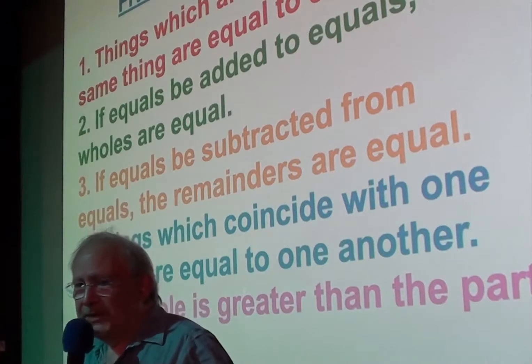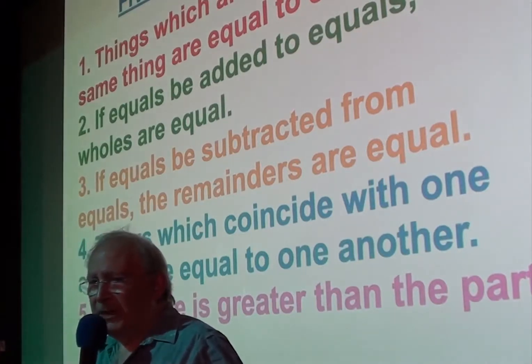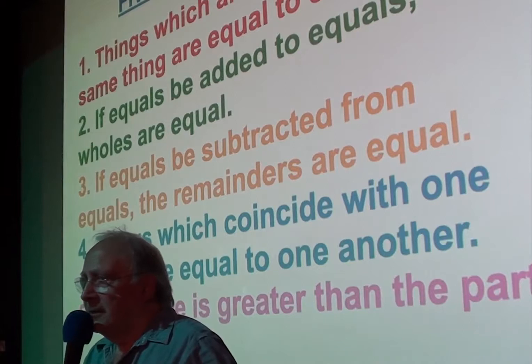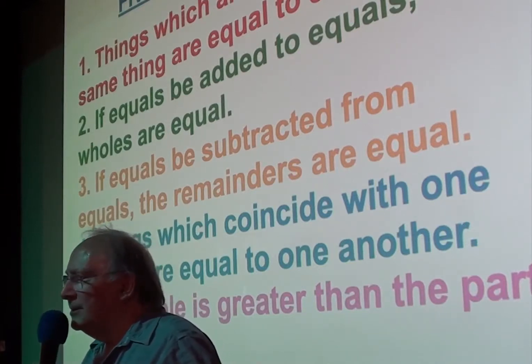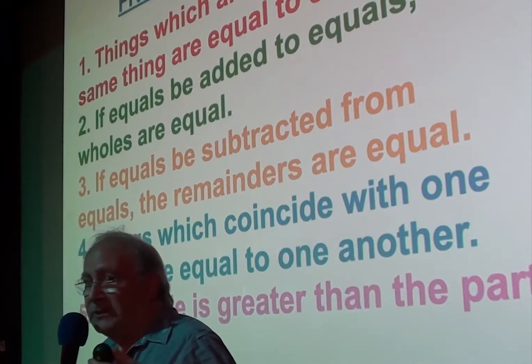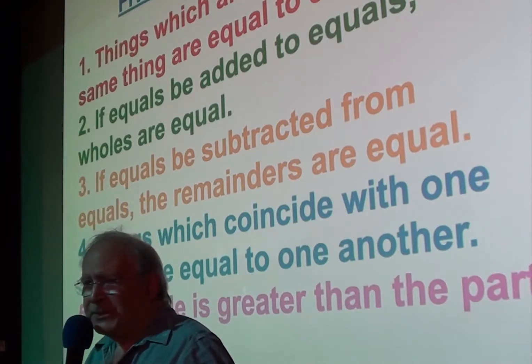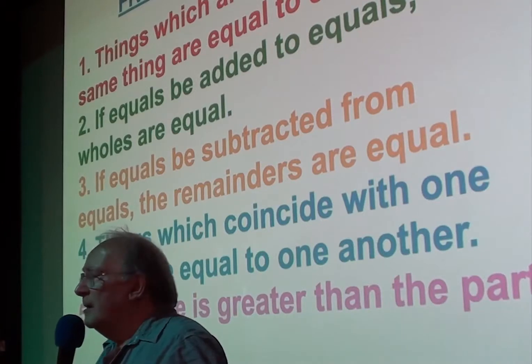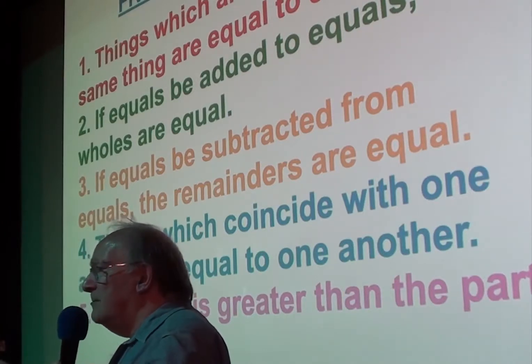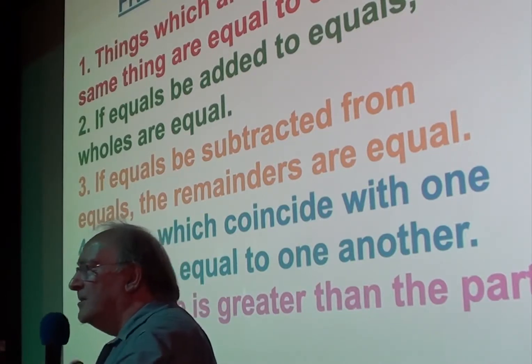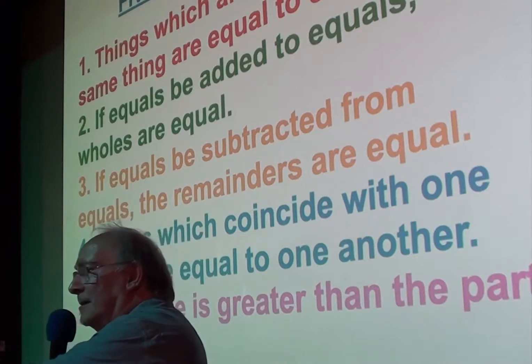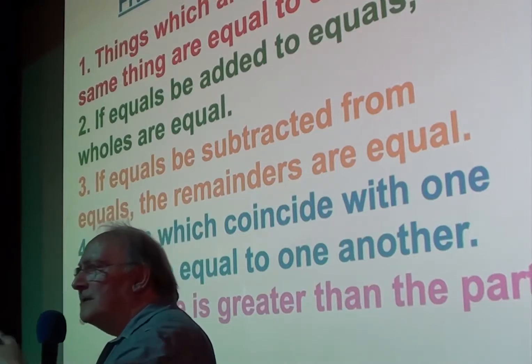Right. The first one, things which are equal to the same thing are equal to each other. I don't know if you saw the film Lincoln, with Daniel Day-Lewis. In the film, Lincoln quotes this line, his argument for abolition of slavery. What does it mean? It means if Tim has the same amount of money as Piano Man Dan, and I have the same amount of money as Piano Man Dan, then Tim and I must have the same amount of money as each other.